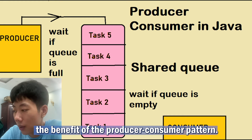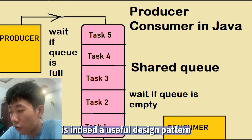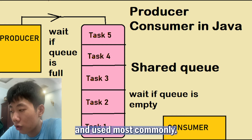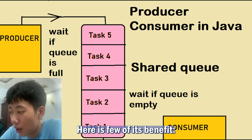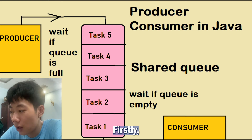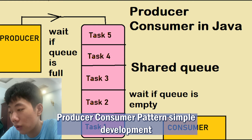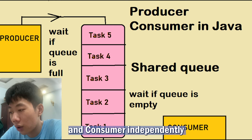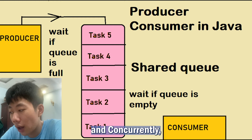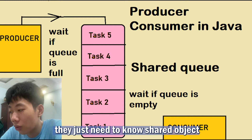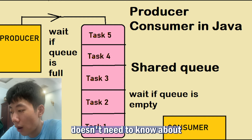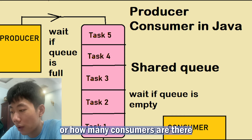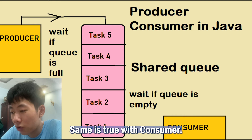Now let's talk about the benefits of the producer-consumer pattern. It is a useful design pattern used most commonly while writing multi-threaded or concurrent code. Firstly, the producer-consumer pattern simplifies development — you can code producer and consumer independently and concurrently. They just need to know the shared object. The producer doesn't need to know who the consumer is or how many consumers there are, and the same is true for the consumer.